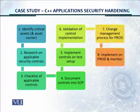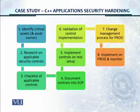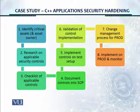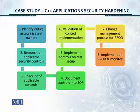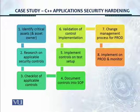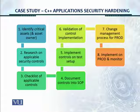As you can see on the next screen, this is the eight-step security hardening methodology proposed in this course. Whatever asset we are taking into consideration for security hardening — in this case, a C++ application — we will go through the same routine of eight steps: identify the critical asset, research applicable security controls, make a checklist of applicable controls, document the controls into the SOP, implement the controls on a test setup, validate the control implementation, prepare for change management, initiate the change management process, implement on production, and then monitor.